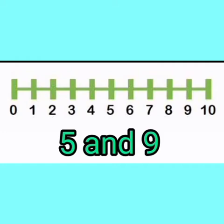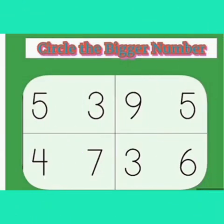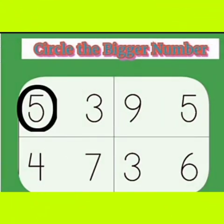The smaller number is three. Kids, between five and nine, which one is smaller? Yes, correct — five is smaller. Now let us circle the bigger number. There are numbers four and three. Kids, five and three — which one is bigger? Yes, five is the bigger number.